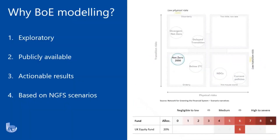Why the Bank of England modelling? One of the key reasons we think the Bank of England model is a good place to start is that it's exploratory. Climate scenario modelling in general is still very much in its infancy, so there's a lot of data with a lot of different aspects to consider and explore. Within an exploratory analysis, you're going through this myriad of data and trying to summarise it into a useful output for further investigation.